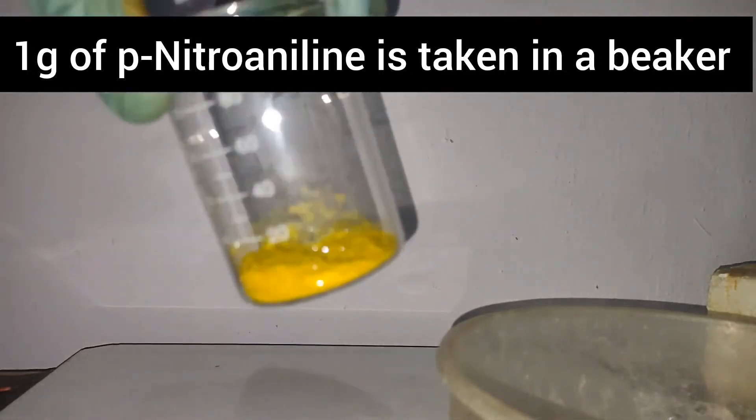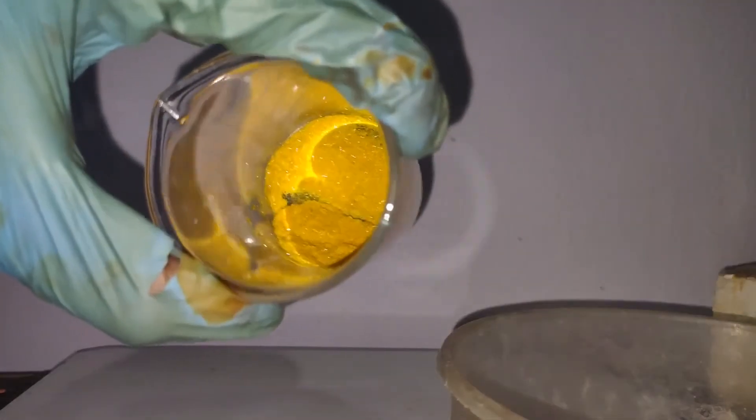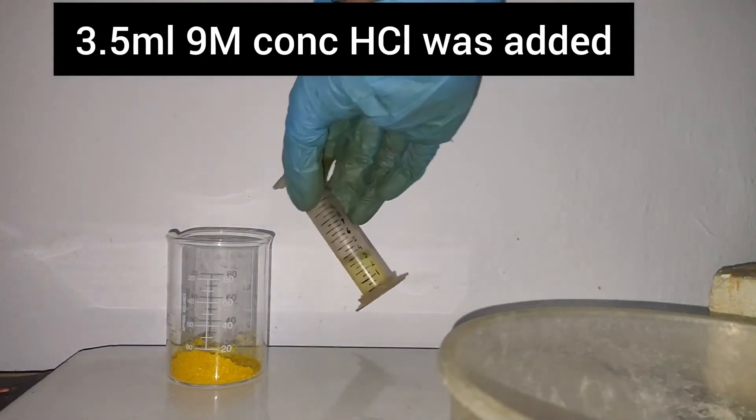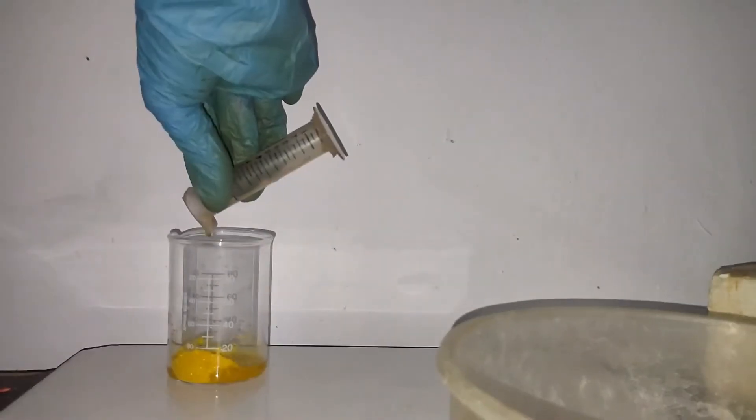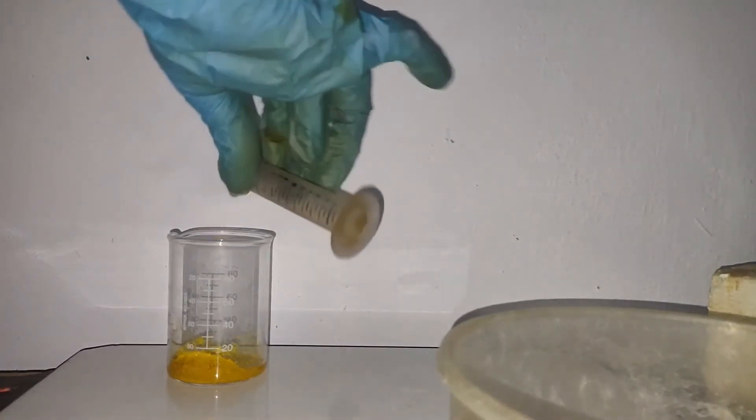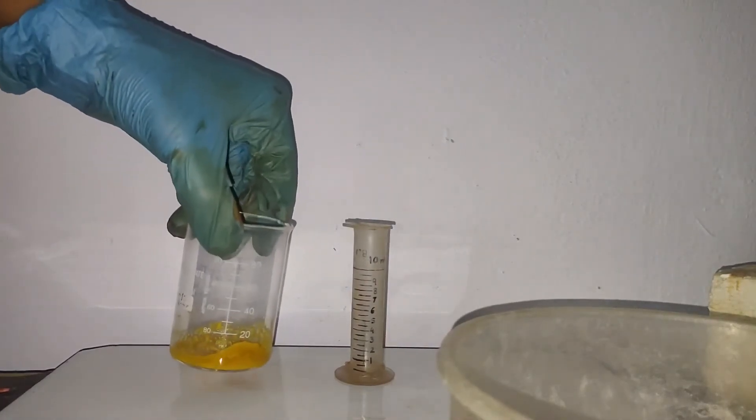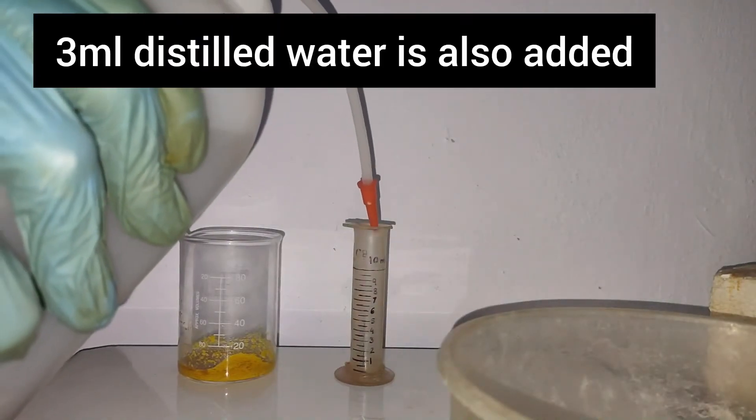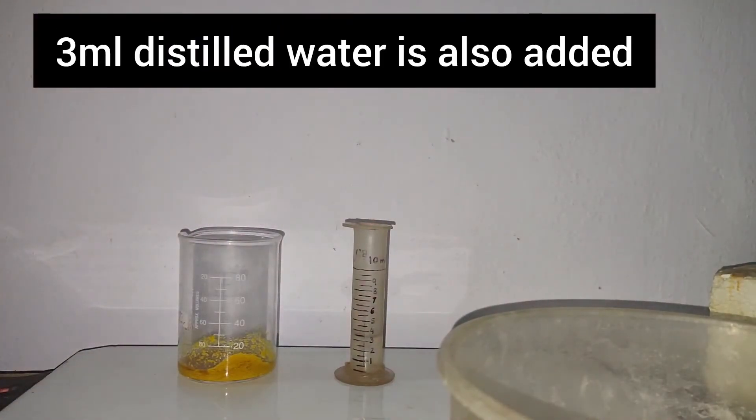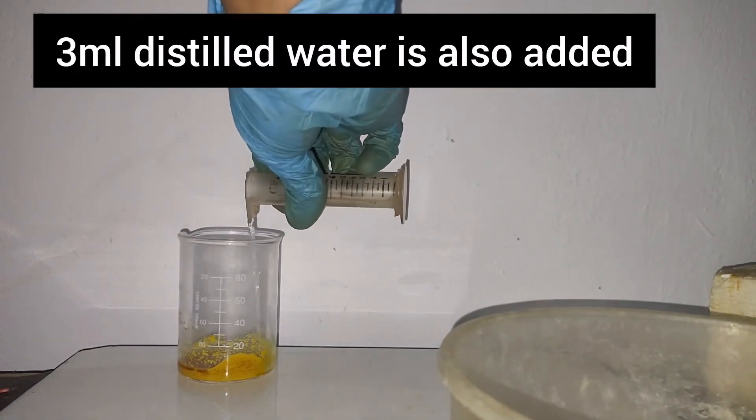First, 1 gram of para-nitroaniline is taken in a beaker. Then 3.5 ml of 9 molar concentrated HCl was added, followed by 3 ml of distilled water. The contents were shaken to dissolve everything.